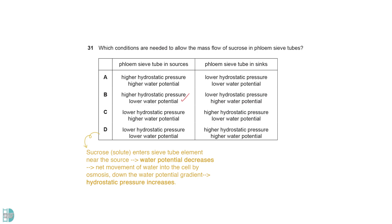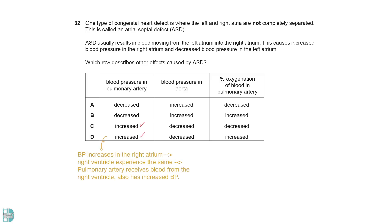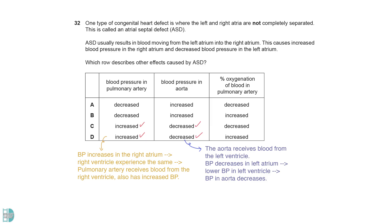D is correct, but the blood comes from the left atrium. The pulmonary artery, which receives blood from the right ventricle, also has increased blood pressure. The aorta receives blood from the left ventricle; the blood comes from the left atrium, so it would experience a similar change in blood pressure with the left atrium. Oxygenated blood from the left atrium enters the right atrium, resulting in an increase in the percentage of oxygenated blood in the pulmonary artery.